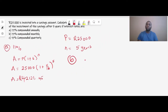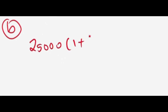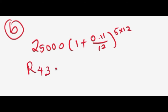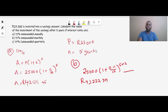To answer the compounded monthly question, we do the exact same thing, but the only difference is that our i we divide by 12 and our n we also multiply by 12. That gives us the answer for compounded monthly.